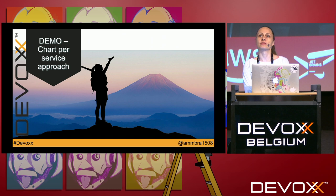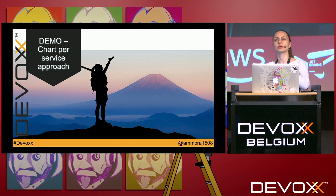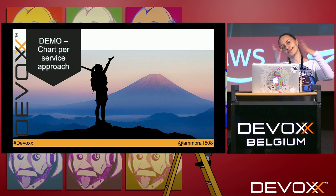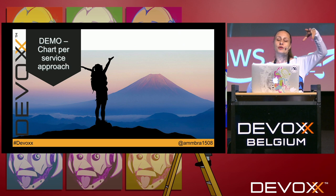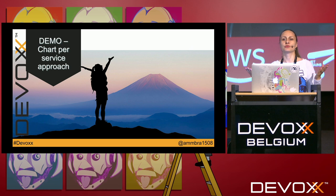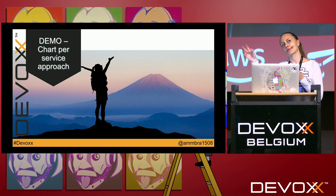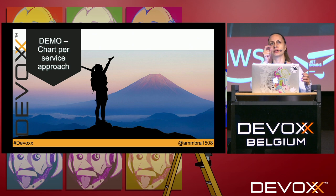The first demo is the chart-per-service approach, where you create a Helm chart that describes each of your microservices or applications. It's a clear way to keep your application code connected to the chart for installation. A downside is that if you have many microservices, maintaining so many charts can be overwhelming, and you may find configurations that repeat across applications that you'd want to manage globally.